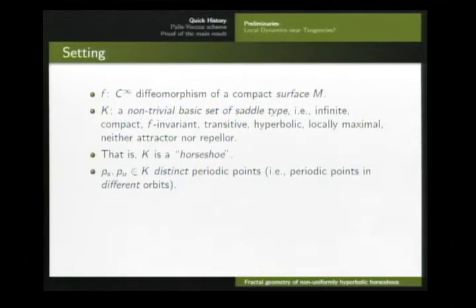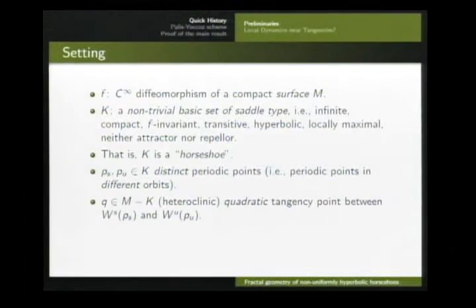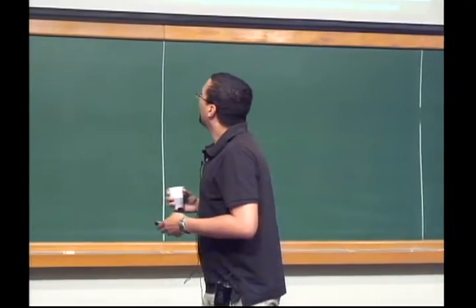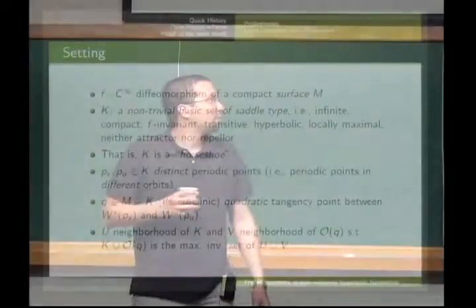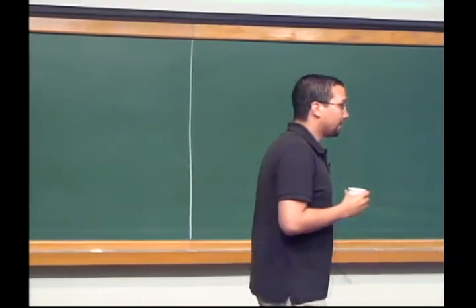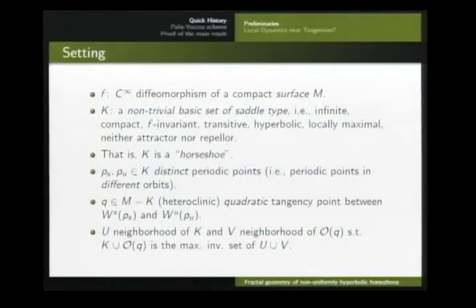Then I select some point q outside the horseshoe, which will be a point of quadratic tangency between the invariant manifolds of these periodic points. This is what people usually call a heteroclinic tangency because I'm putting the assumption that these points are distinct. Otherwise, if you allow these points to be equal, then it's a homoclinic tangency. Finally, I select two neighborhoods: u is a neighborhood of the horseshoe, and v is a neighborhood of the orbit of my tangency.